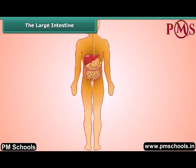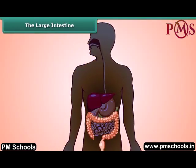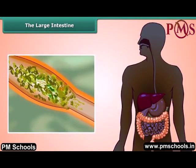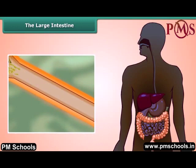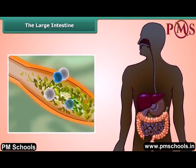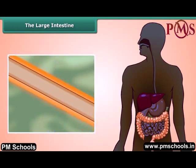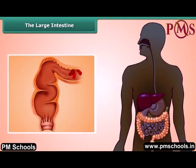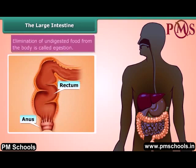When chyme gets into the large intestine, it absorbs most of the water and some salts from the undigested food. This step is important because recovering water keeps us safe from dehydration. Once most of the water is gone, solid waste moves to the last part of the large intestine called the rectum, and the fecal matter is removed through the anus. This is called egestion. This is how human digestion completes.